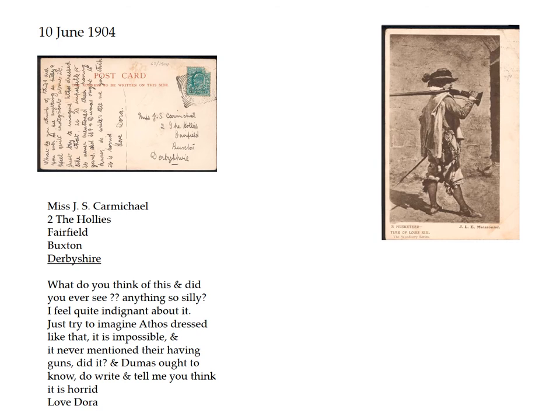Here's another card in the collection of Janet Carmichael, from a friend she had since early childhood, Dora, who lived in Stretford. Janet had been born in Stretford in Manchester, daughter of a Scottish surgeon, but when she was three her father died and she and her mother moved initially with the grandmother and then into a house in Buxton. What the girls are doing here — Janet and her friend Dora — is discussing popular culture: a book by Dumas, The Three Musketeers, and the picture postcard shows a representation of one of the characters from the novel.